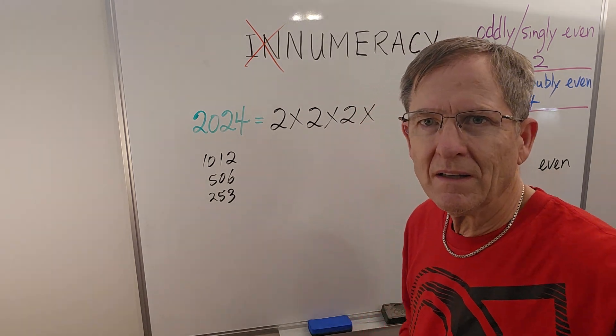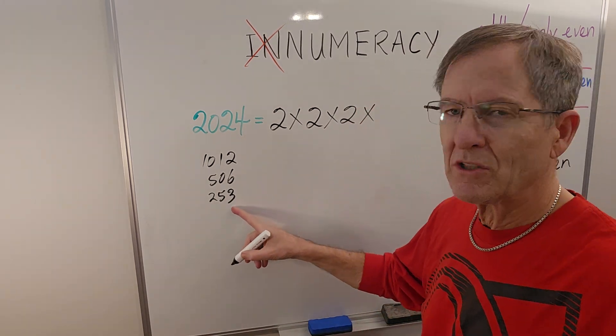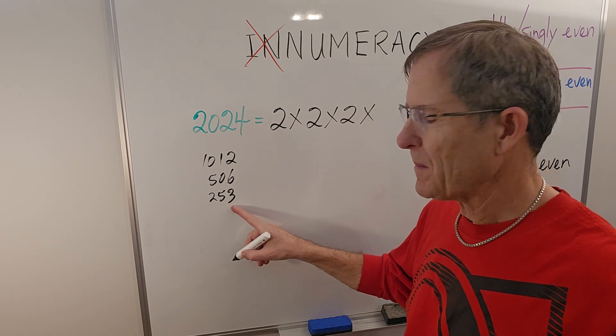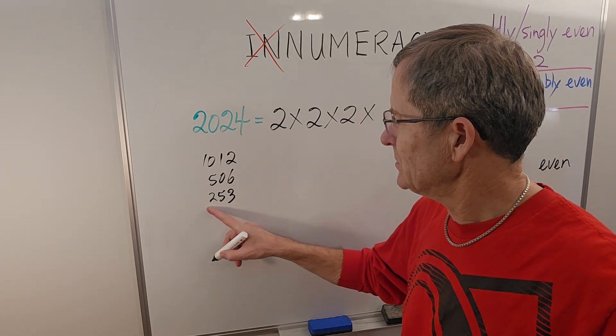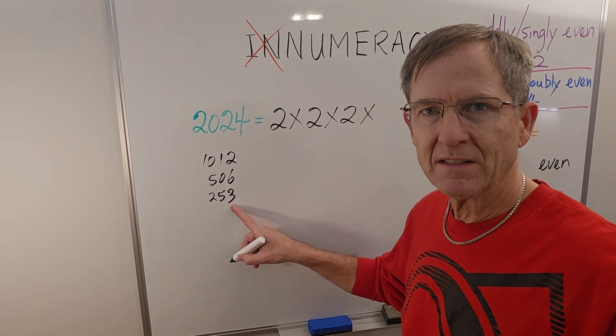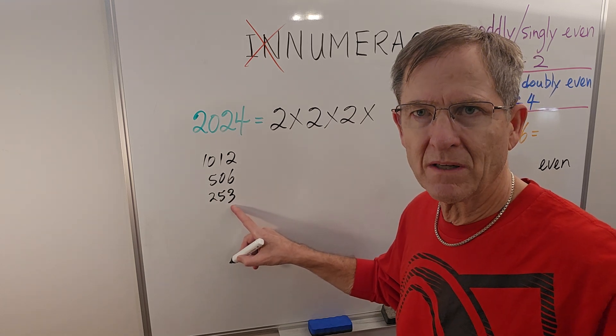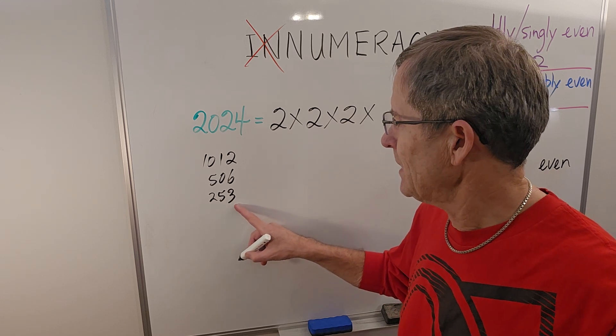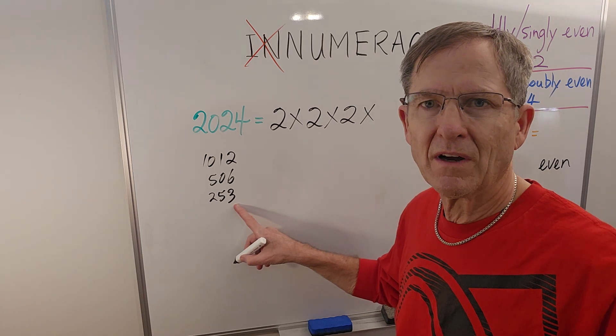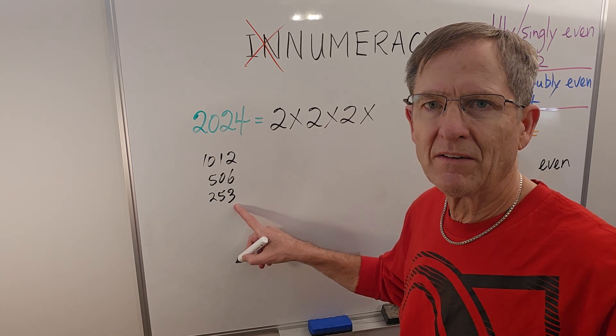And then what? Well, you can't divide it by two anymore, so let's try three. Remember the trick for divisibility by three? If you add the digits, two plus five plus three, you get ten. Ten is not divisible by three, so neither will 253 be divisible by three. Of course, it can't be divided by five, because it doesn't end in a five or a zero.